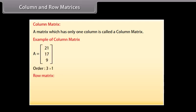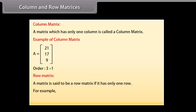Row matrix: a matrix is said to be a row matrix if it has only one row. For example, [3, 5, 1] is a row matrix as it has only one row.